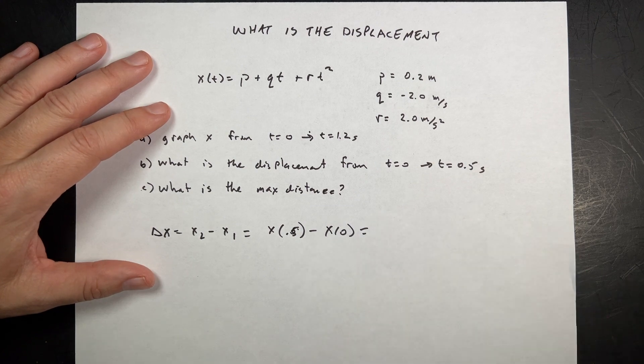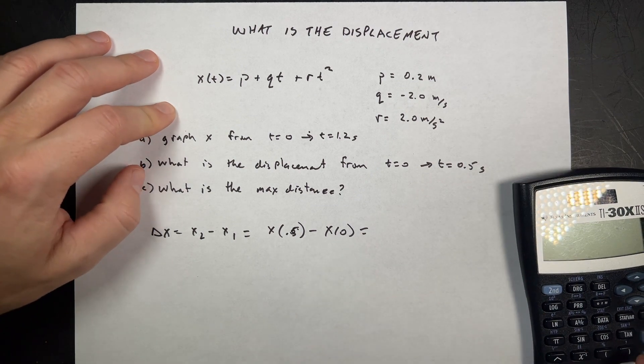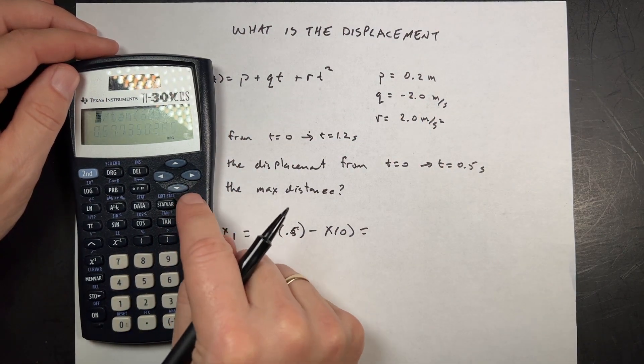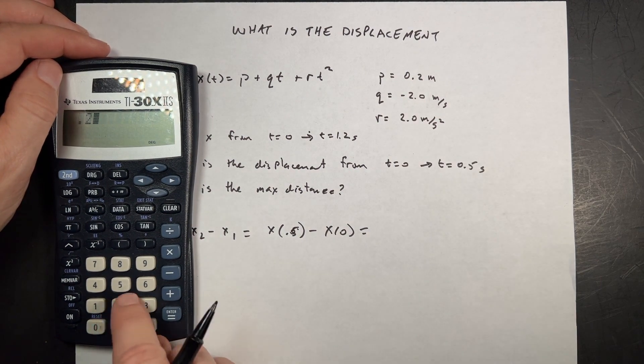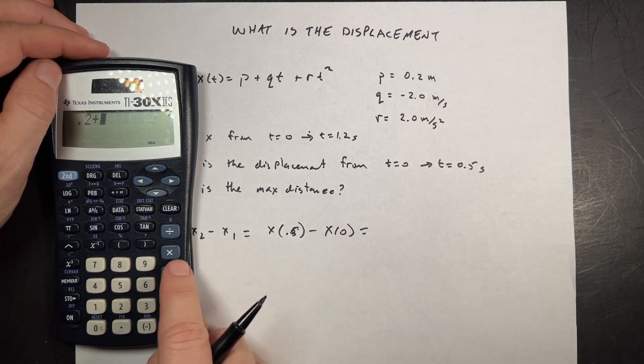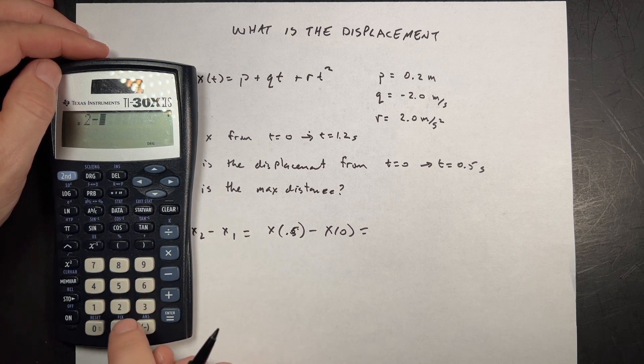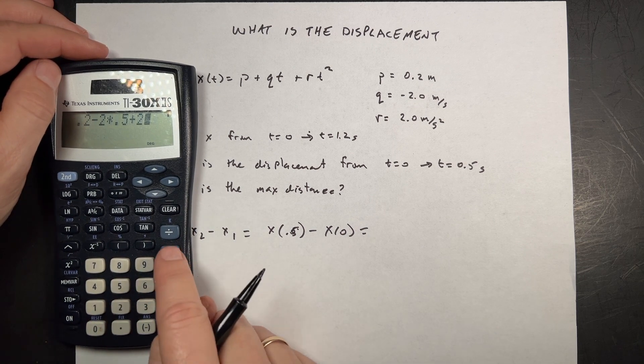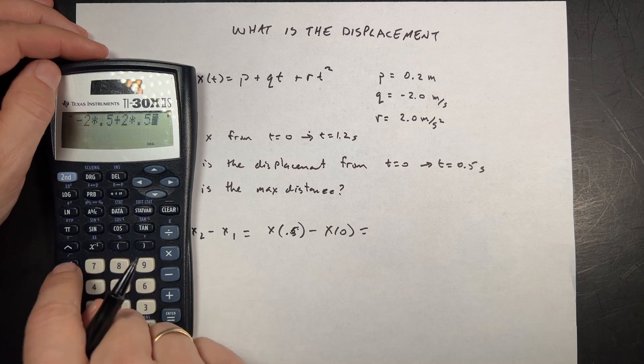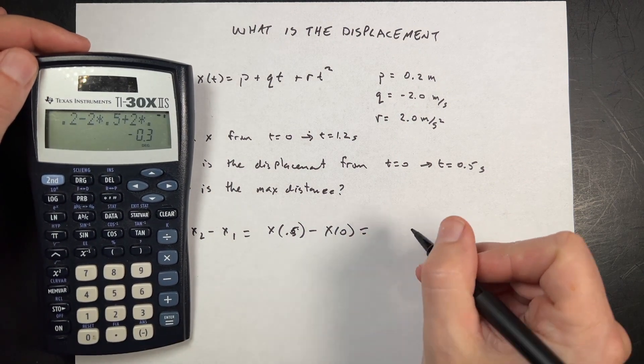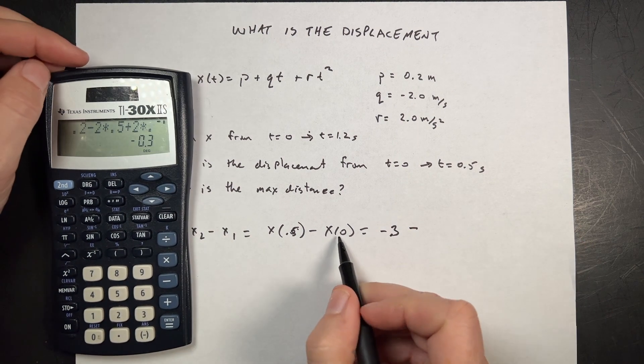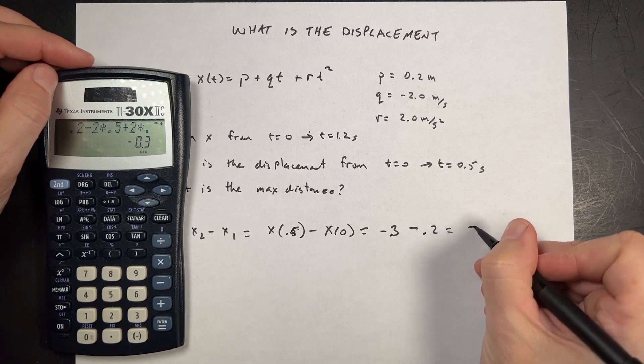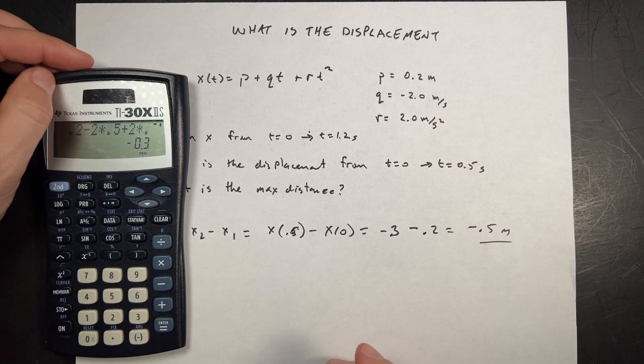So this is going to be equal to, let's just do it with the calculator. So if I put in 0.5, I need to put these values in here. So I'm going to say P 0.2 plus Q, so let's say clear, 0.2 minus 2 times T of 0.5 plus 2 times 0.5 squared equals. And I get negative 0.3 minus at 0, so I'm going to get P plus 0 plus 0. So I get 0.2 and that's going to be equal to negative 0.5 meters. That's my displacement. That's not too hard.